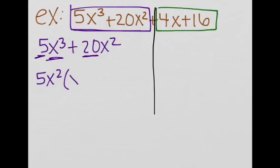We factor that out and we get x plus 20x² divided by 5x², which is 4. So we get 5x² times (x + 4). Now let's do it for the last two terms.